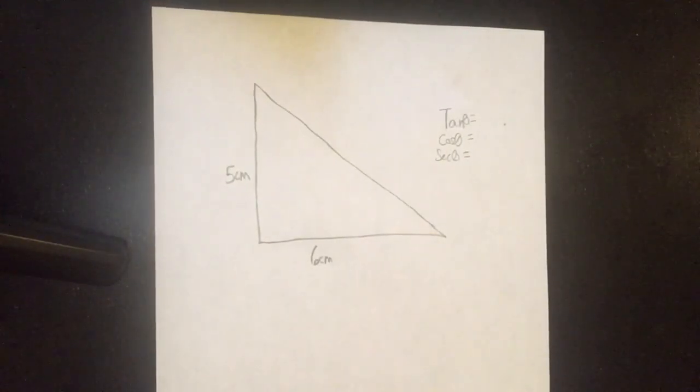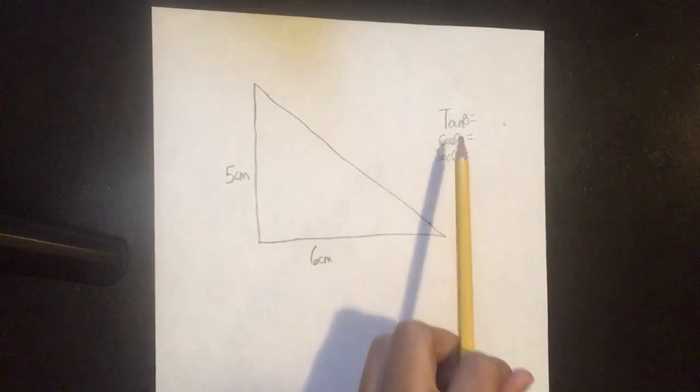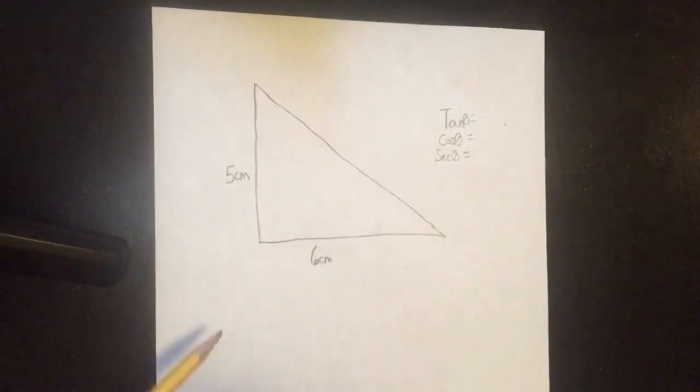Hello everybody, and welcome back to my first ever trigonometry video. Today, we are going to be using the Pythagorean theorem to help us find trigonometric ratios. We need to find the tangent, the cosine, and the secant of the triangle.